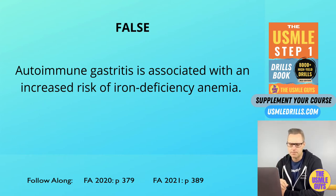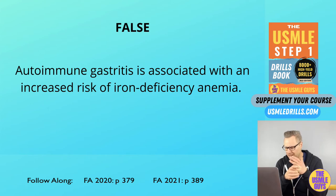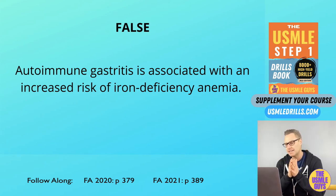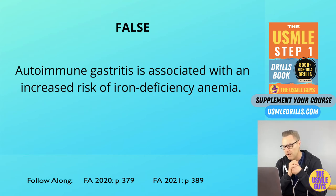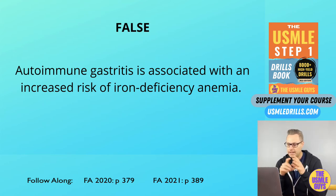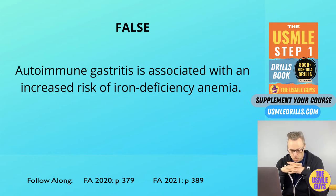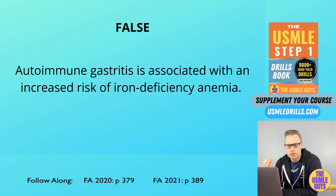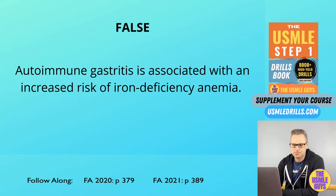A couple of additional details to keep in mind: if we see the Sister Mary Joseph nodule, this is a malignant metastatic umbilical nodule indicating advanced malignancy. Blumer shelf describes a palpable mass found on digital rectal exam, suggesting metastasis has moved to the rectal uterine pouch — this shows up on Step 1, 2, and 3 questions. The last thing to remember is the Krukenberg tumor, which is bilateral metastasis to the ovaries, characterized by the presence of mucin-secreting signet ring cells.